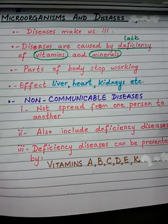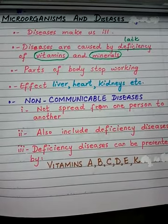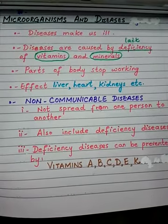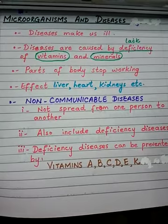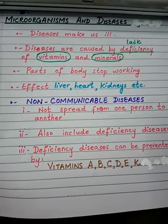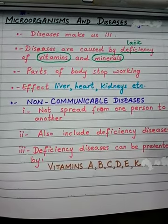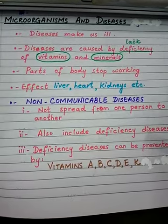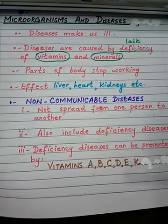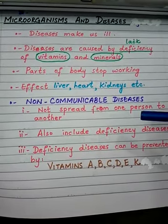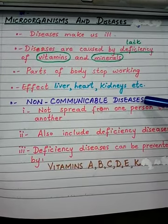For example, stomach disorders cannot be spread from one person to another person. These can occur in any person at any time due to the wrong intake of food or an imbalanced diet. If someone has a stomach problem, it never shifts from one person to another. Such diseases — including bacterial diseases, fungal diseases, and protozoan diseases like dysentery and diarrhea — will never shift from one person to another, and so these are considered non-communicable diseases.